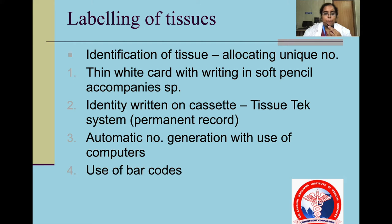Labeling of tissues: identification of the tissue should be allocated with a unique number. Usually it is a thin white card with writing in soft pencil. Sometimes it is written along with a cassette where it is a permanent record. Automated generation can be helped with the use of computers and barcodes.